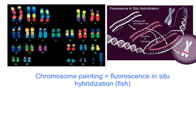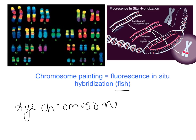Chromosome painting is another form of DNA analysis. It's also called fluorescence in situ hybridization, or FISH. With chromosome painting, we use fluorescent markers to dye the chromosomes or label specific genes. The chromosome marker either goes in and finds a specific gene or dyes the chromosomes, and so you can then compare either the genes or the chromosomes to one another.